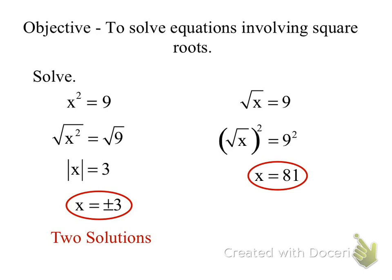When you have the square root of something, you'll have one solution. When you have x² = 9, you'll have two solutions. Basically we're building up to the quadratic formula — this is pieces and parts of the quadratic formula.